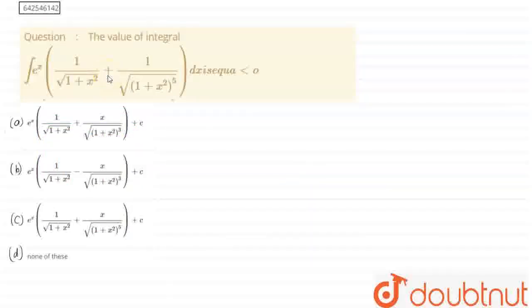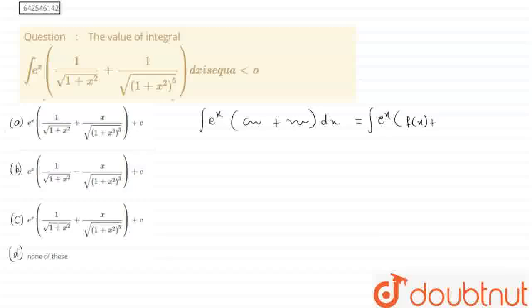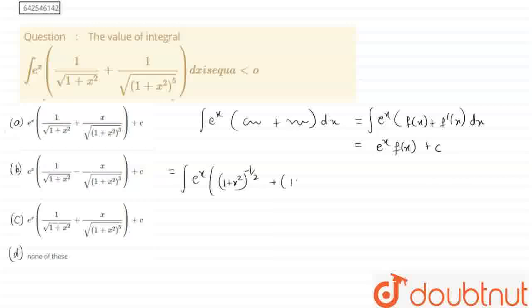So in this question, we have to solve this indefinite integral. In these types of questions where e to the power something plus something is written times dx, we have to look for a function which looks like e to the power f(x) plus f'(x). The integrand given is e to the power x times (1 + x²)^(−1/2) plus (1 + x²)^(−5/2).